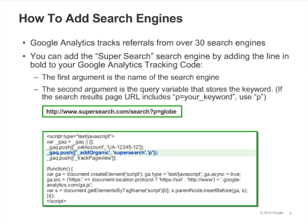Add a call to AddOrganic in your Google Analytics tracking code. The first argument is the name of the search engine, and the second argument is the query variable.